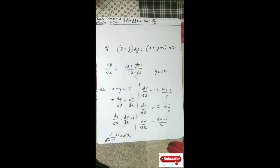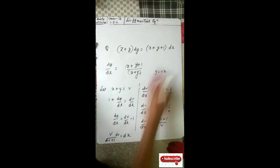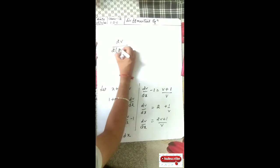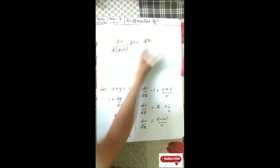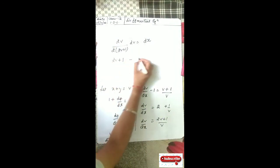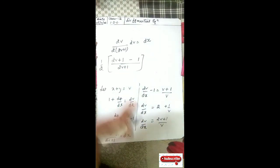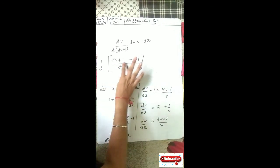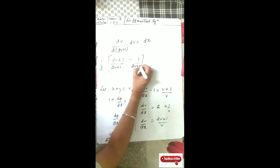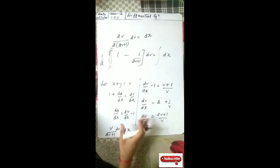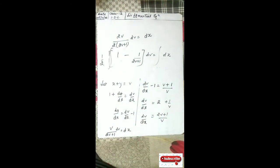Separate v terms and x terms. To integrate, multiply numerator and denominator by 2: you get 2v upon 2(2v plus 1) dv equal to dx. Add plus 1 and minus 1 in the denominator and separate. Integrating both sides gives the final answer. I hope you will complete this. In the next lecture we will take linear differential equations of first order. Thank you and have a nice day.